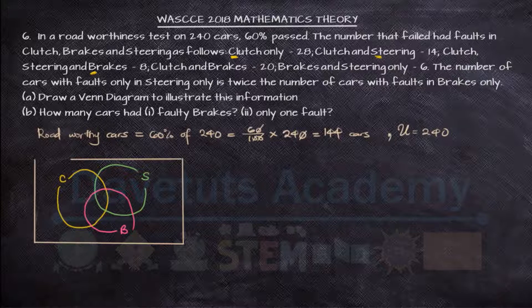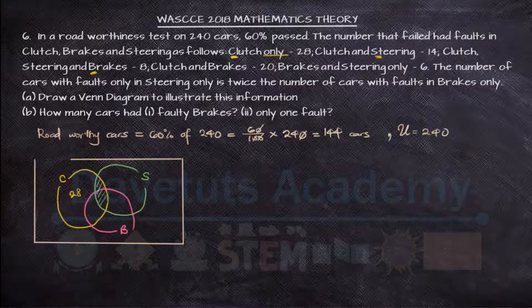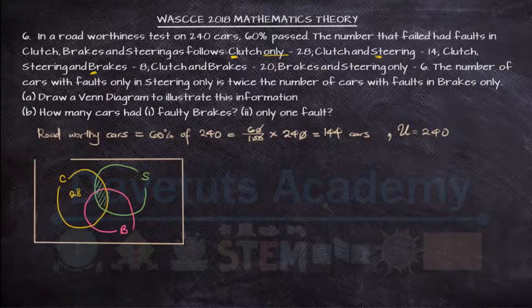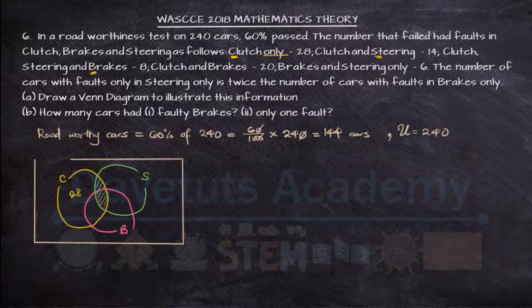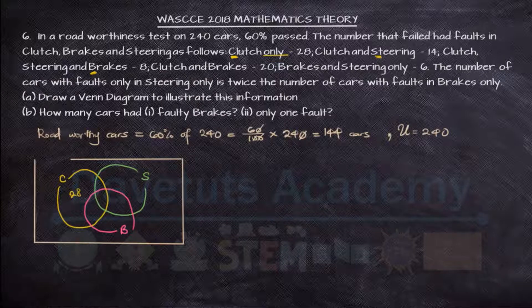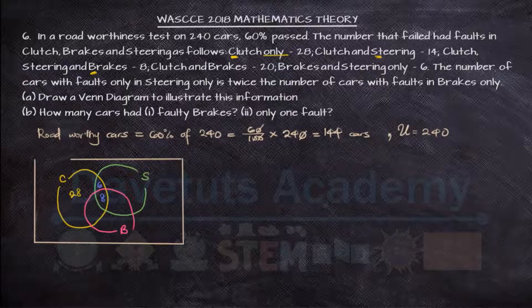28 only have clutch issues. So that will be represented in this circle that is not interfacing with anything. Then we have clutch and steering is 14 as shaded in green. But we have been told that clutch, steering and brake as shaded now, they constitute 8. So if you have 8 in the center, then the other will have to be 6 so that the two will add up to 14 that we are told is constituting the clutch and steering.